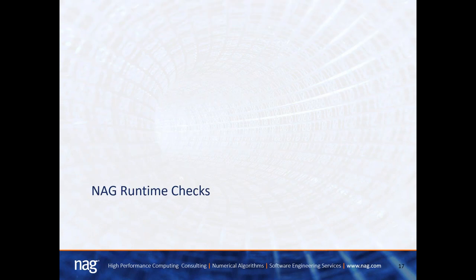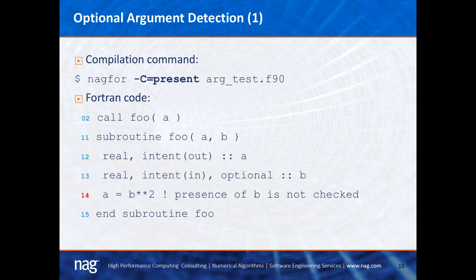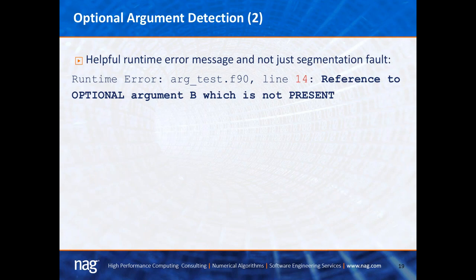In addition to compilation checks, the NAG compiler also has runtime checks. The first is building a code with the -C present flag. In this example, line 2 calls subroutine foo with only one argument, while the subroutine at line 11 has dummy argument B as optional. However, on line 14, that argument is used but is not present. When executing this code, rather than just a segmentation fault, it prints a helpful runtime error: 'line 14, reference to optional argument B which is not present.' It tells you where the error occurred and why.